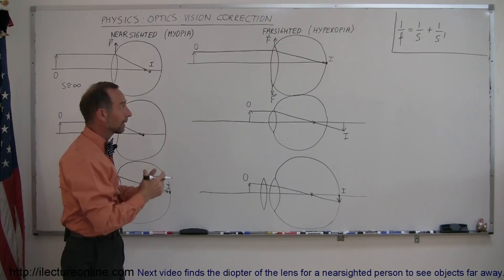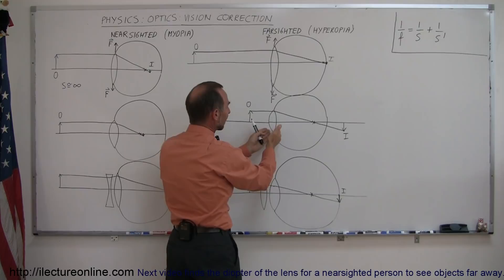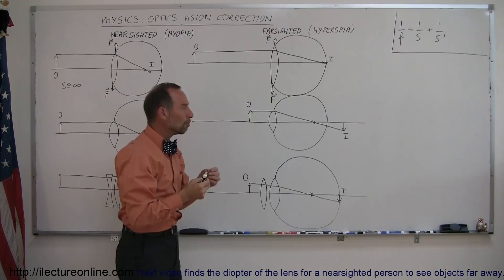But then what happens is when you bring the object closer, then of course the muscles will let go, the lens begins to shape more like this, that brings the focal point in, but if the lens doesn't bulge up enough, and of course there's no muscles that make the lens bulge up, the lens bulges by itself if the muscles don't stretch it.